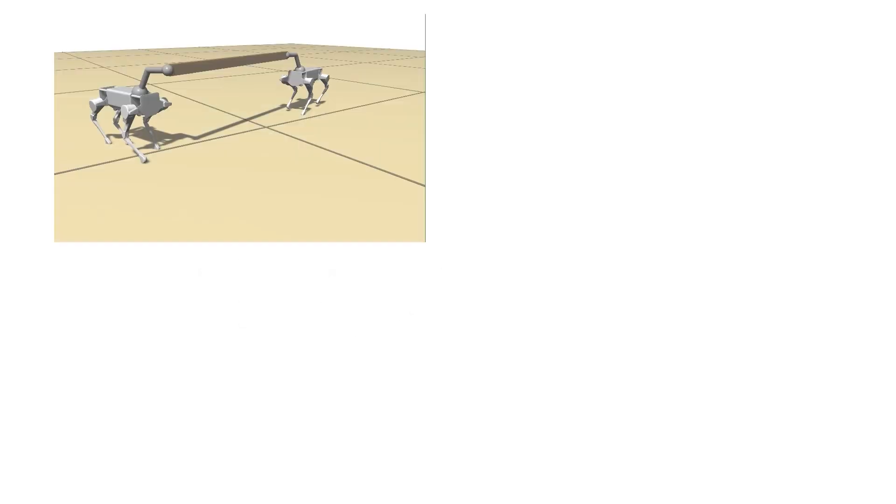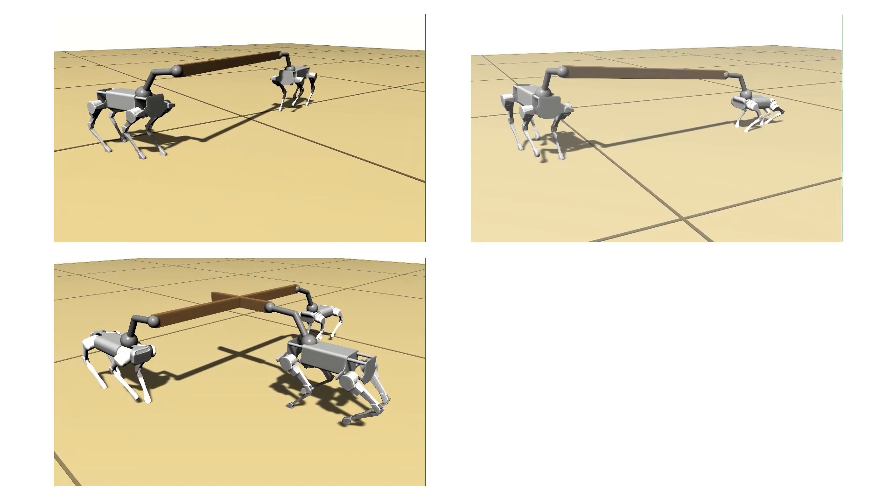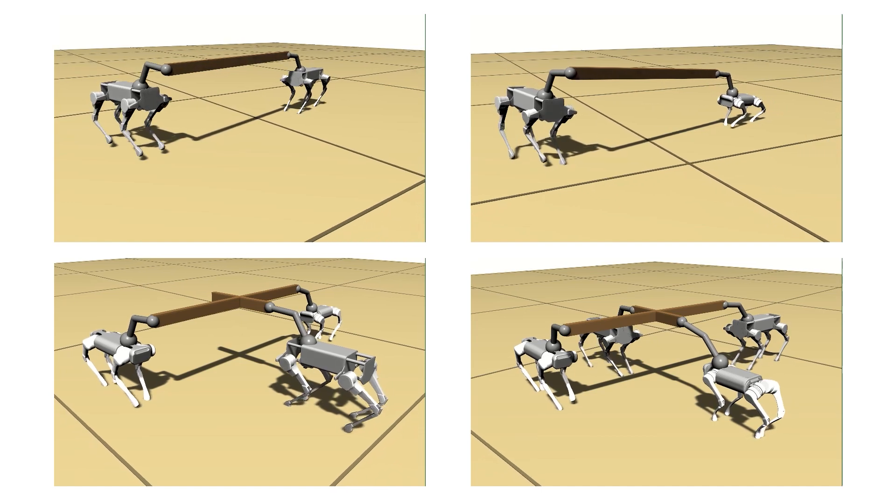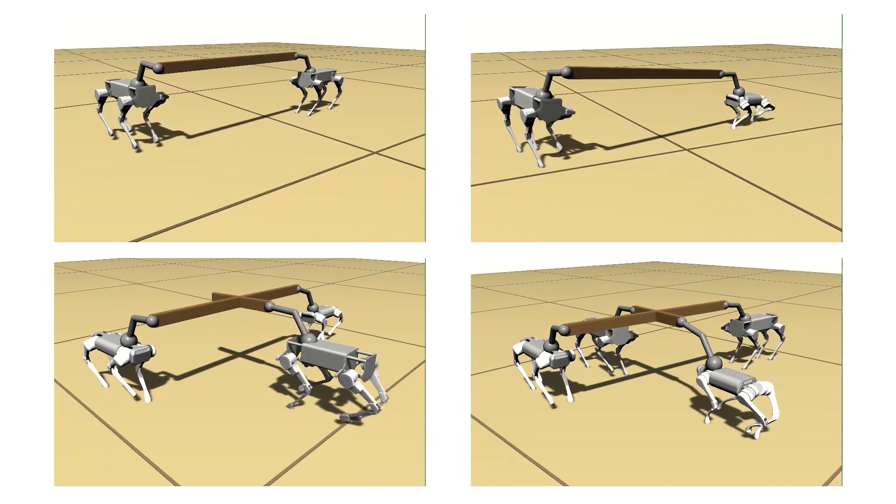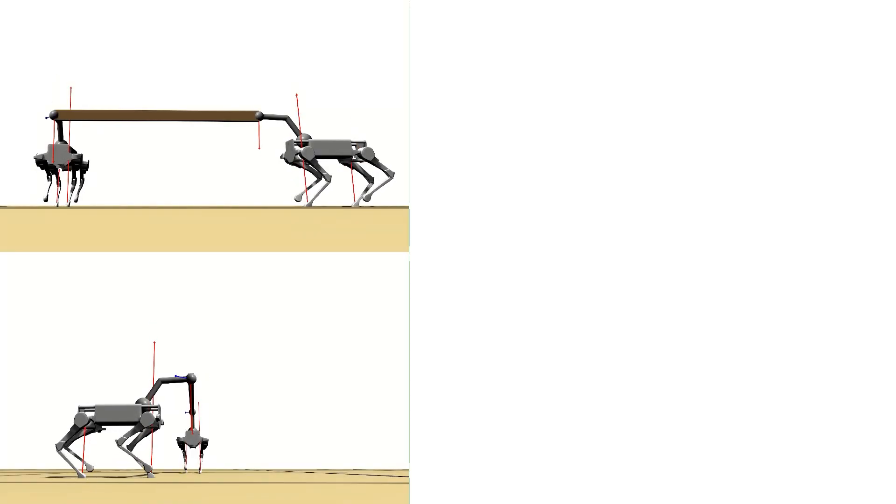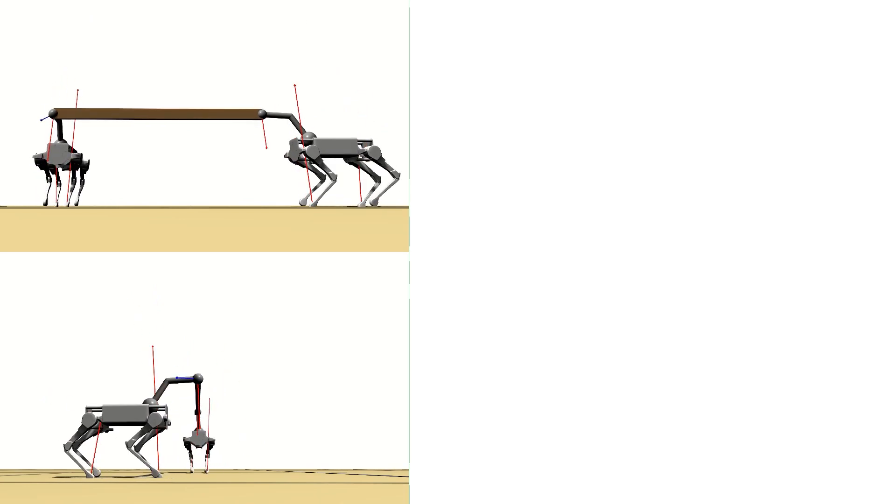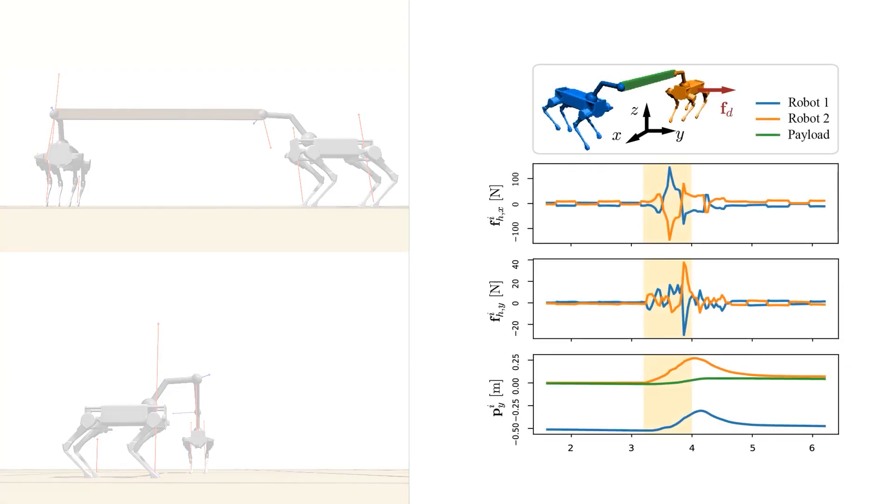We demonstrate our MPC in simulations with different robots cooperatively carrying a timber object while adopting various gaits. We assess the emergence of collaborative behaviors by disturbing one of the agents with a force while demanding the manipulated beam remain stationary. The yellow part in the diagram denotes the time frame in which the disturbance is applied to the system.